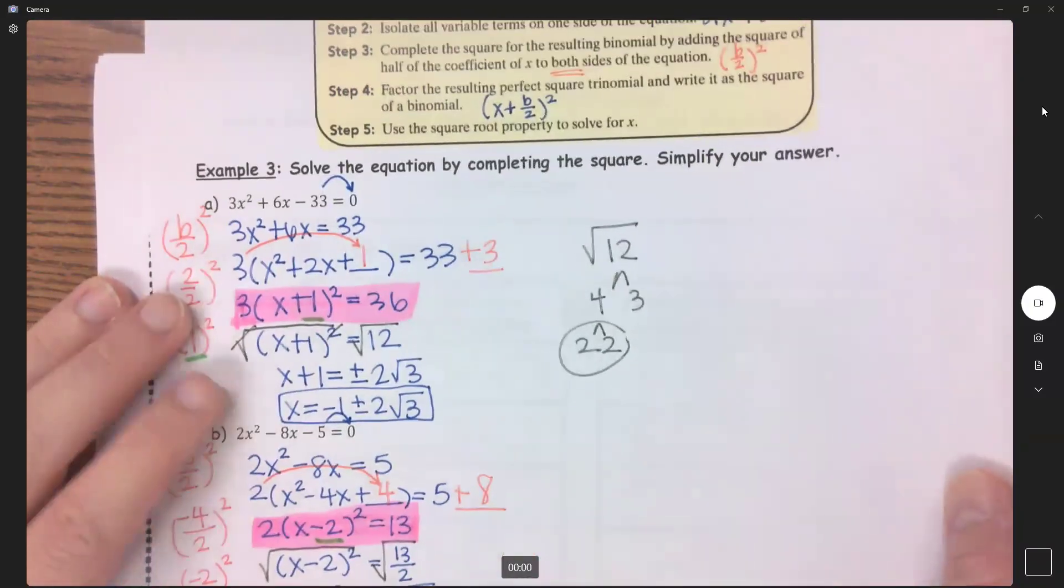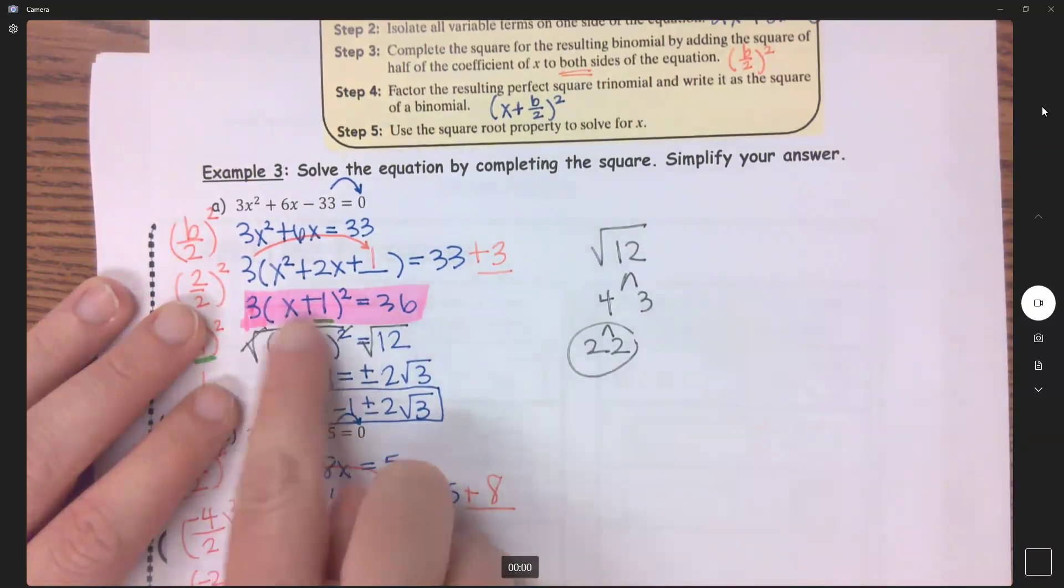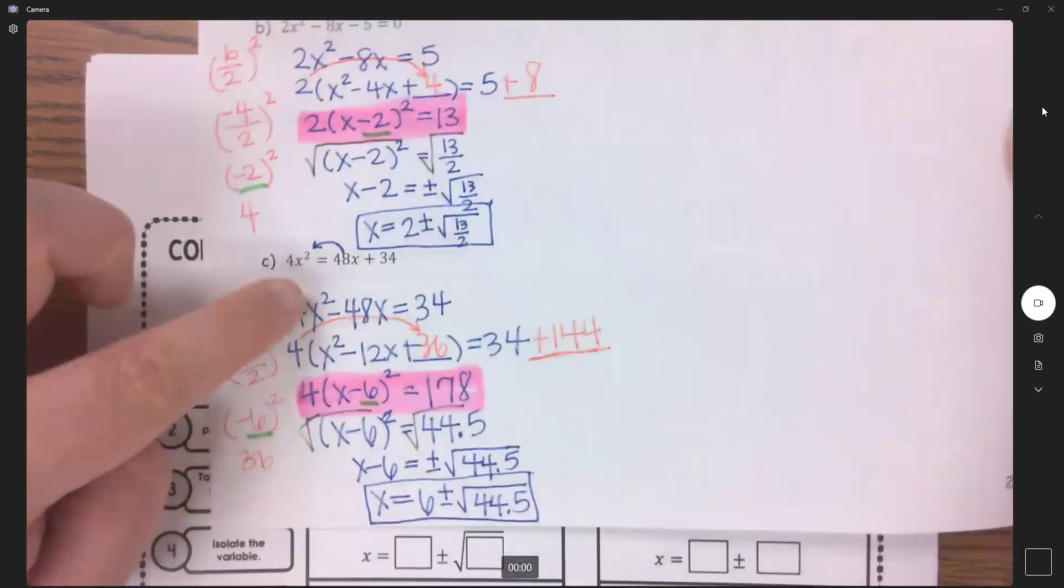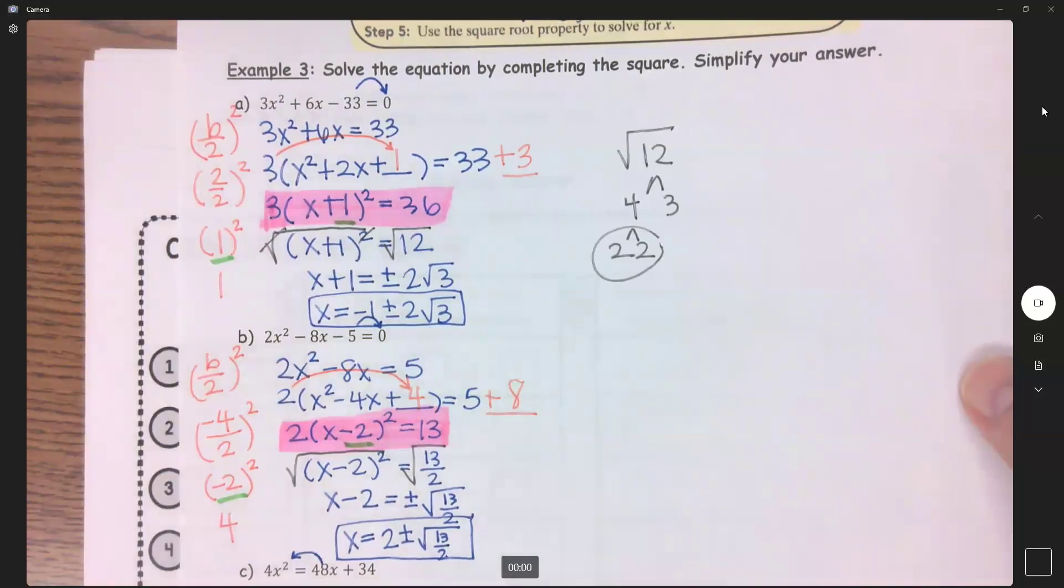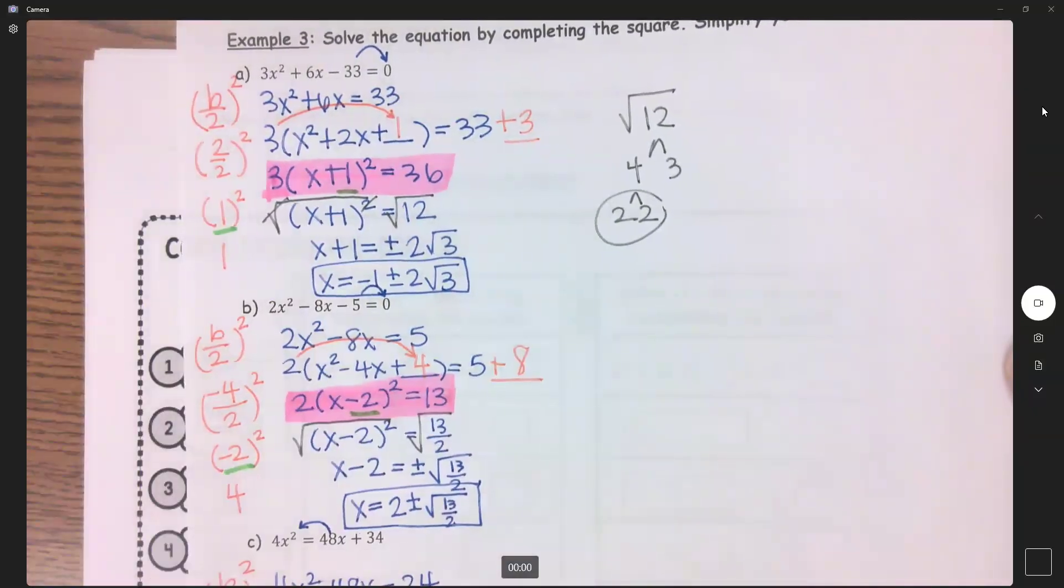When we're in the conic sections, I need to get to this step right here where I'm writing one side as a binomial of squares. That's what I need to get to because I'm not going to be solving for variables when I get to the conics, but we are going to be using this concept.